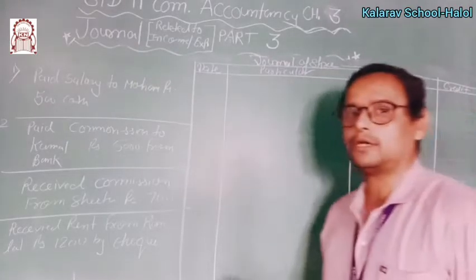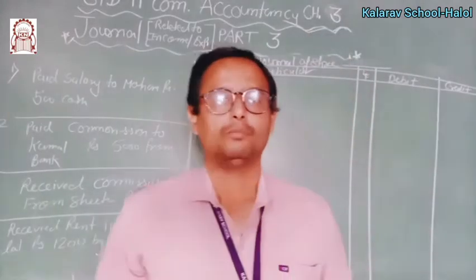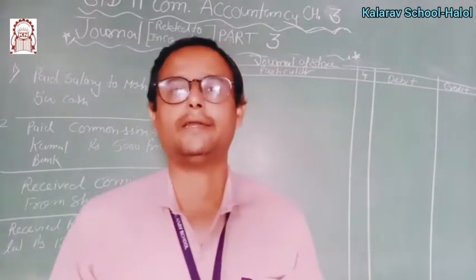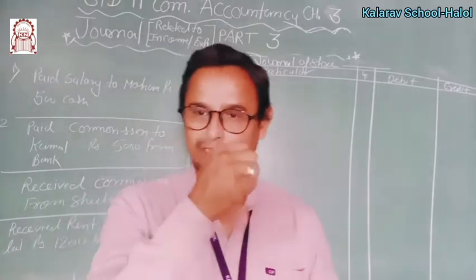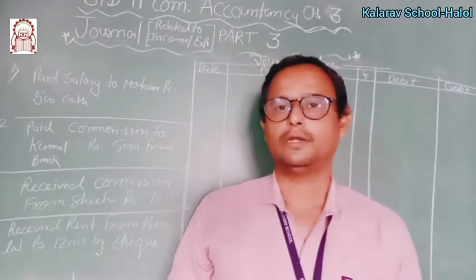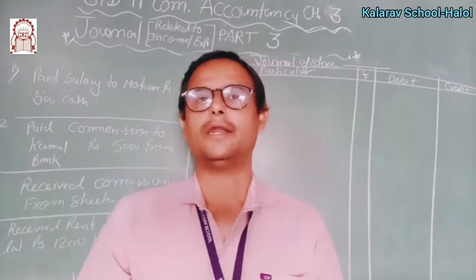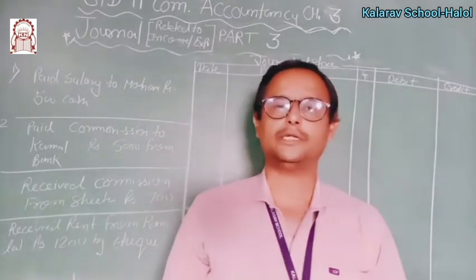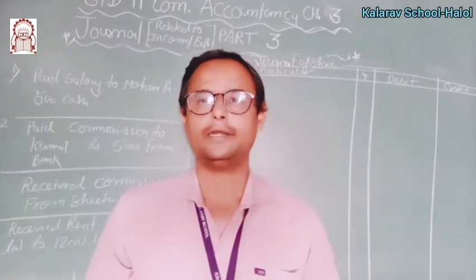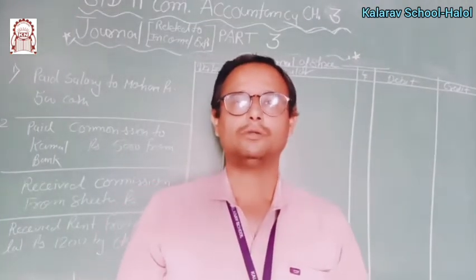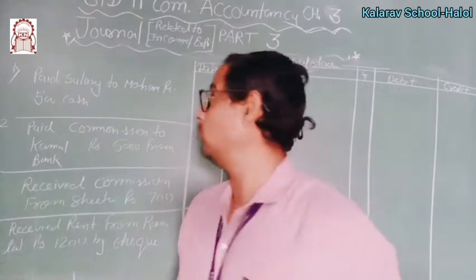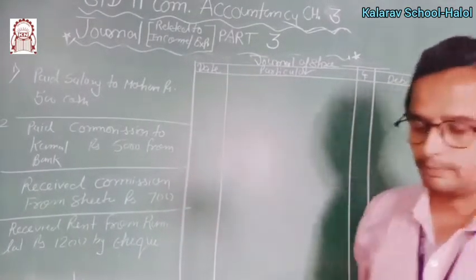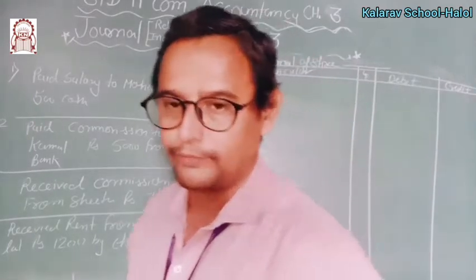Okay children, in the third section mostly payment paid and received — that type of transaction we are going to understand here. In the first one, capital and bank related and drawing related transactions I explained; in the second one, purchase and sales and trade discount and cash discount. Now in the third one, the different payments or whatever we receive or receivable, we are talking about that.